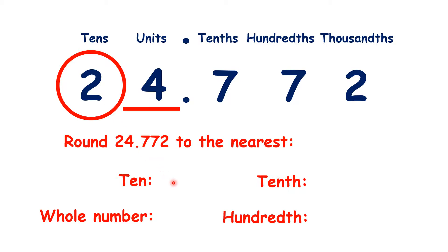So 24.772 rounds to 20, because we know that digits to the right turn into zeros. But we don't need to write 20.000 — we can just write 20.